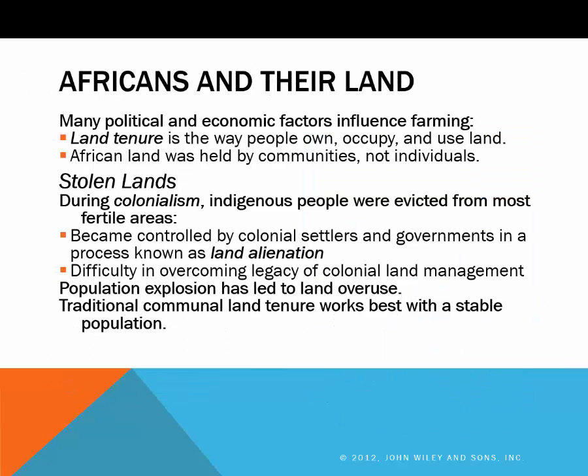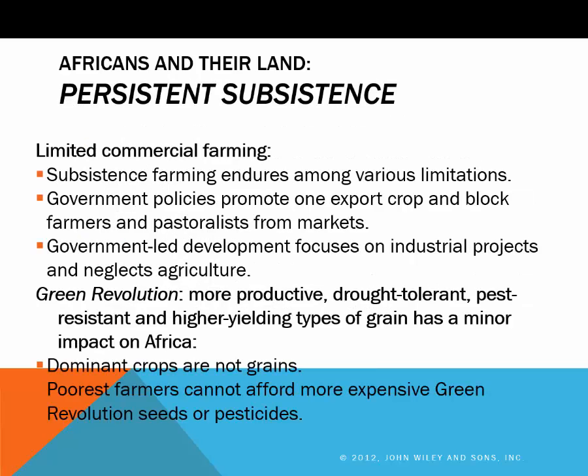Land is owned in Africa via a process called land tenure, where communities and not individuals hold land. Occupants have temporary rights to land and cannot sell it. This has been complicated since the Europeans came in with their concept of land ownership, and through the buying and selling of land, things have become complicated once the Europeans left. We don't have a lot of commercial farming in Africa. The major crops are maize, millet, and root crops, and there is some livestock herding. Government policies complicate things, and the so-called green revolution has not yet had a major impact on Africa.